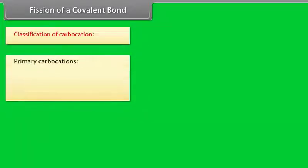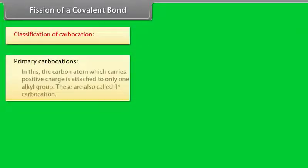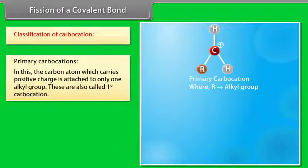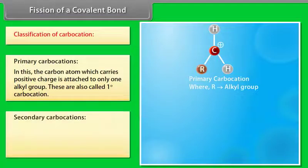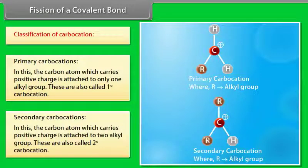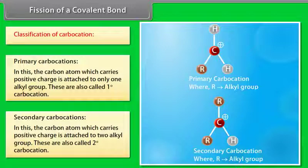Classification of carbocations: Primary carbocations — the carbon atom which carries positive charge is attached to only one alkyl group; these are also called one degree carbocations. Secondary carbocations — the carbon atom which carries positive charge is attached to two alkyl groups; these are also called two degree carbocations.